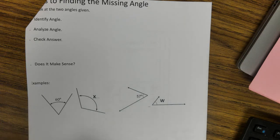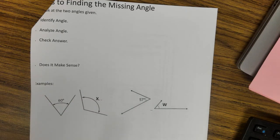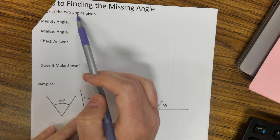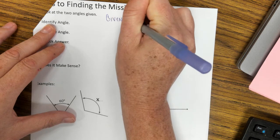Okay, so let's look at practicing different types of angles and really thinking about what makes sense. As we try to determine the missing angle, we're going to look at the two angles given and think about what have we been given.